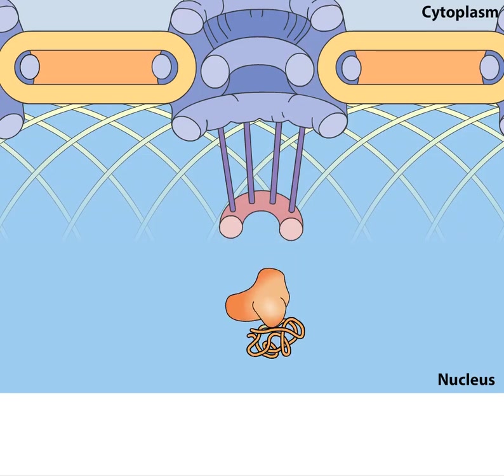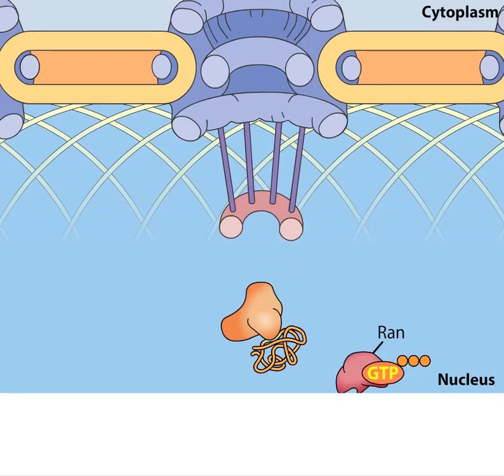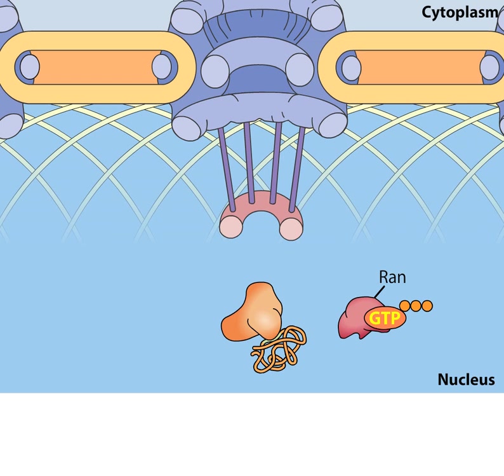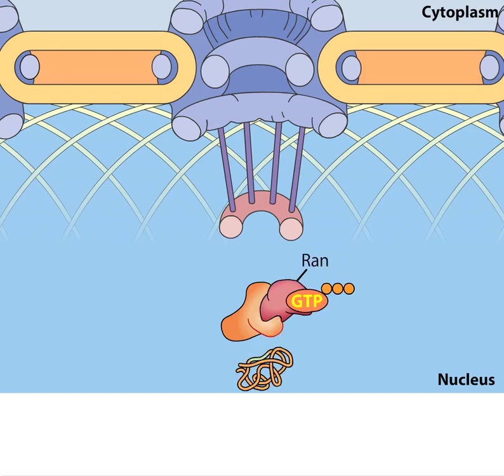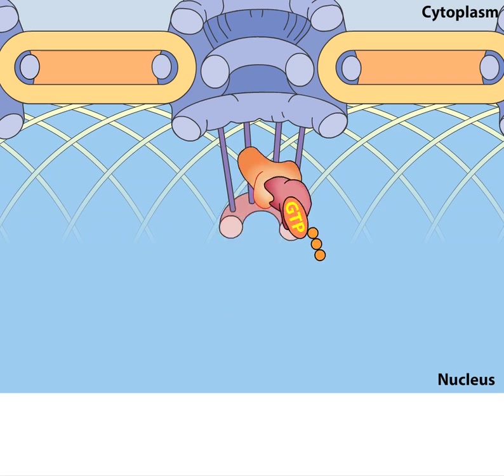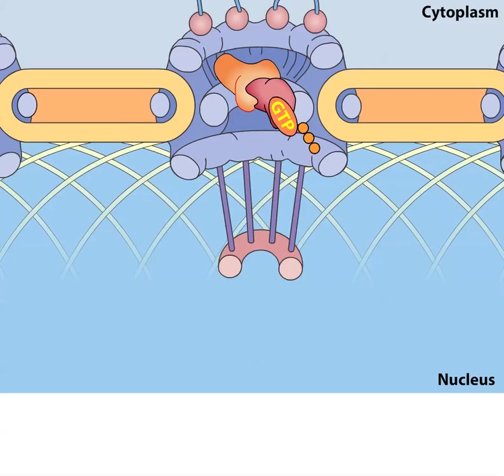At the nuclear side of the pore, the complex is disrupted by the binding of a protein called RAN to importin. RAN carries a molecule of GTP. This binding changes the conformation of importin, which then releases its cargo protein into the nucleus. The importin-RAN complex is then re-exported through the nuclear pore.